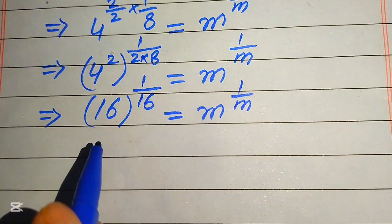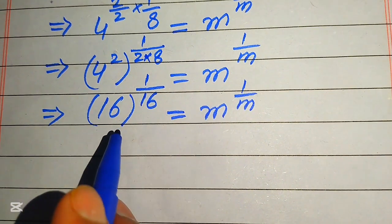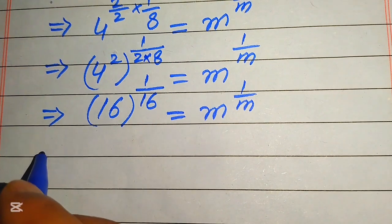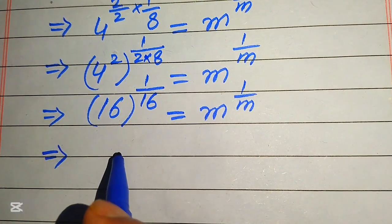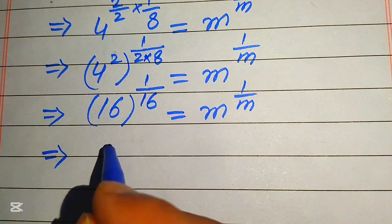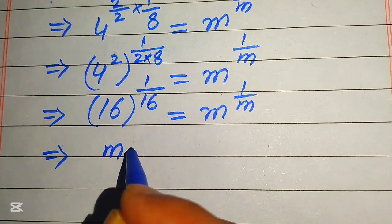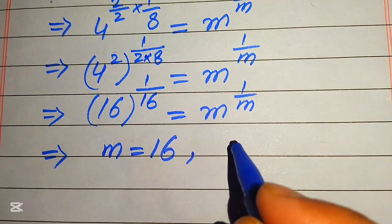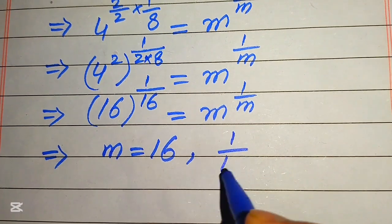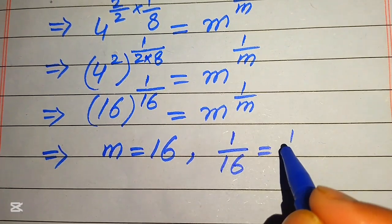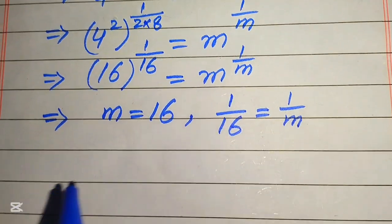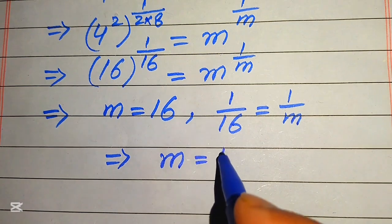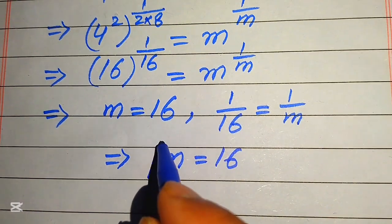We now have 16 to the power of 1 over 16 equals m to the power of 1 over m. From both sides, the exponent is the reciprocal of its base. Comparing the bases gives us m equals 16, and comparing the exponents gives 1 over 16 equals 1 over m — both cases give the same value: m equals 16.